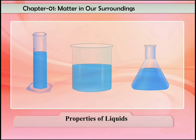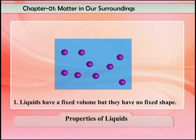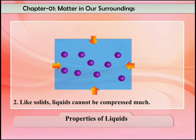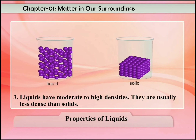Liquids have the following characteristic properties: one, liquids have a fixed volume but no fixed shape. Two, like solids, liquids cannot be compressed much. Three, liquids have moderate to high densities — they are usually less dense than solids.